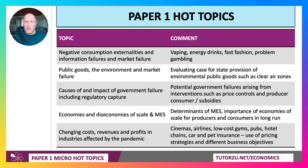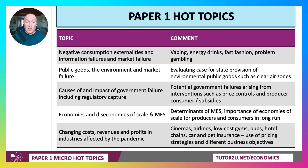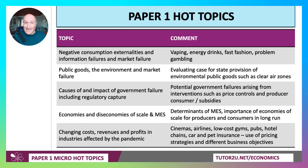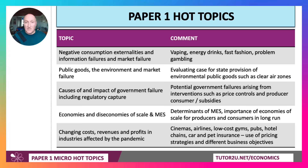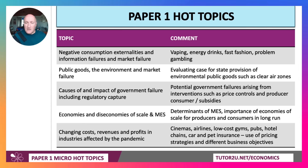My instinct is they may well choose, for a data response or even an essay, changing costs, revenues, and profits in industries impacted by the pandemic. So, for example, the cinema sector, airlines, low-cost gyms, pubs, hotel chains, car and pet insurance, the surge in demand for pets, the surge in demand for second-hand cars, the very high inflation in pet insurance and car insurance. So they could well take an industry along those lines — perhaps low-cost gyms and cinemas — and think about pricing strategies and different business objectives at different stages of the economic cycle.